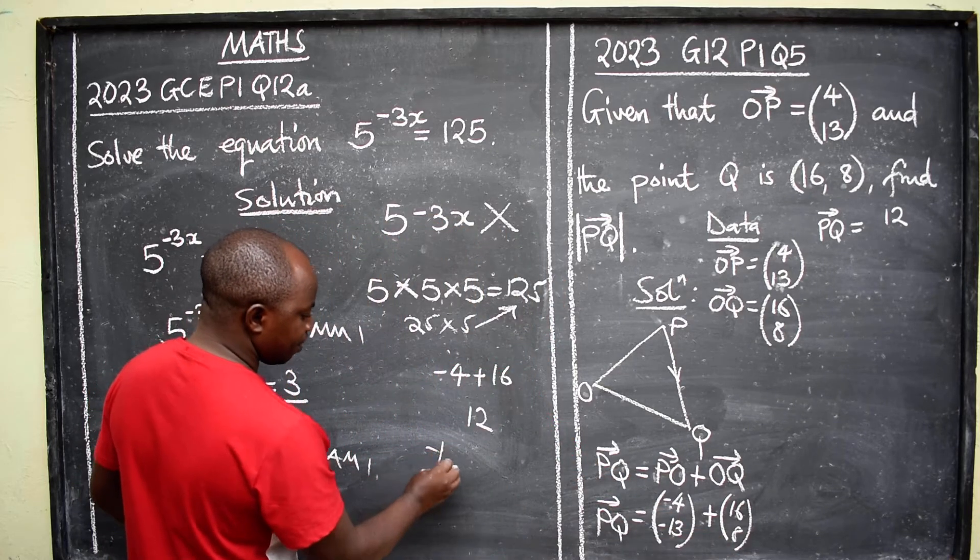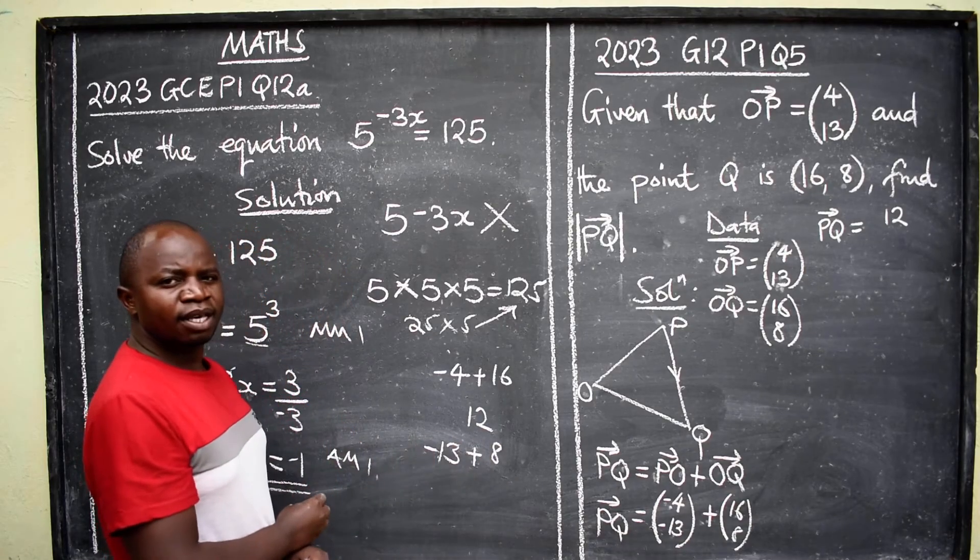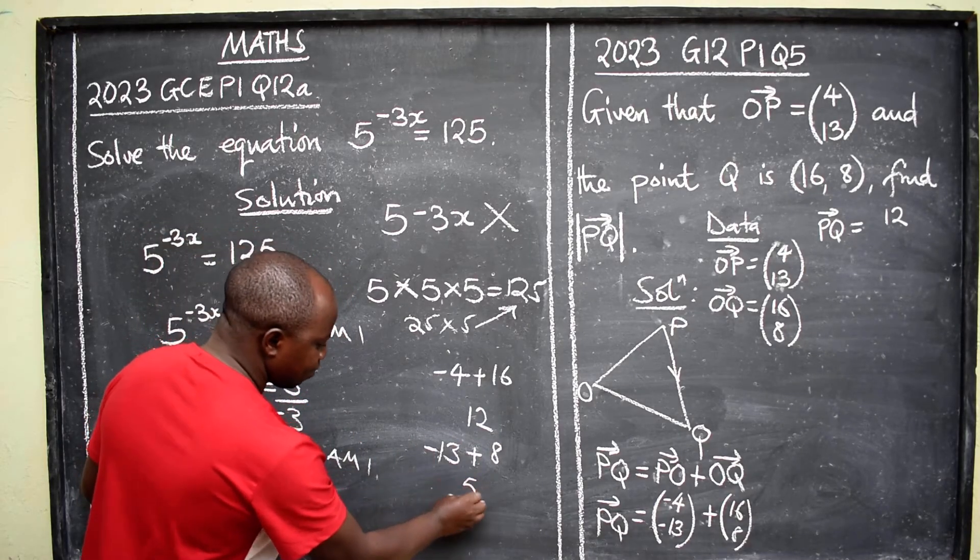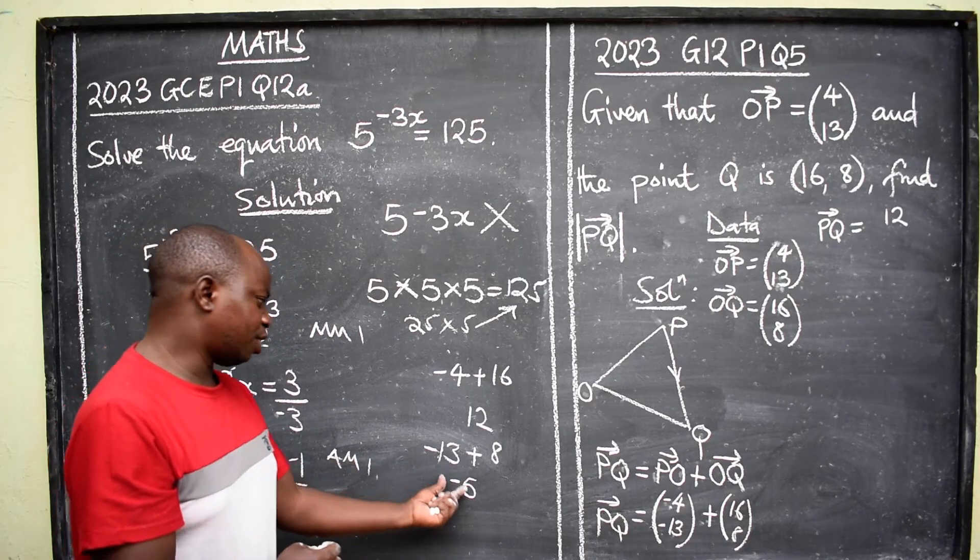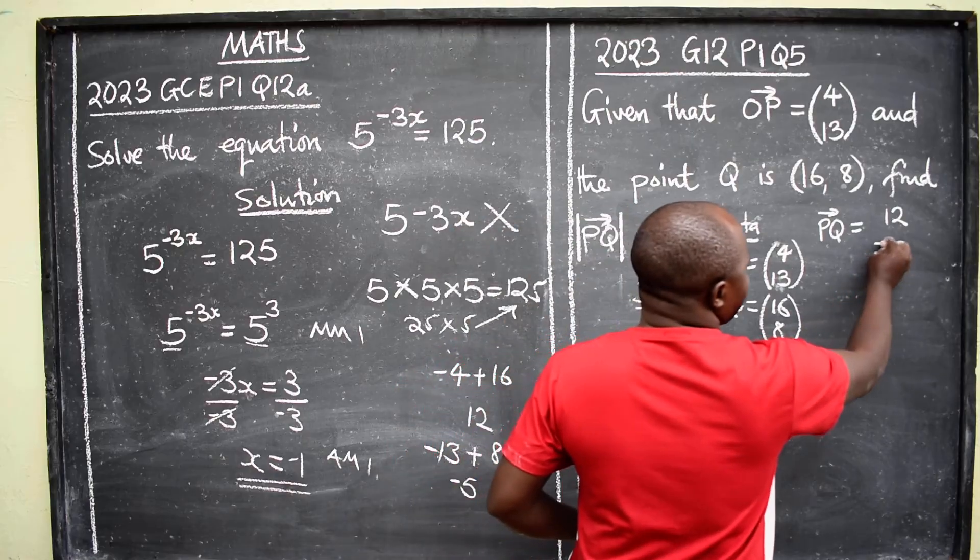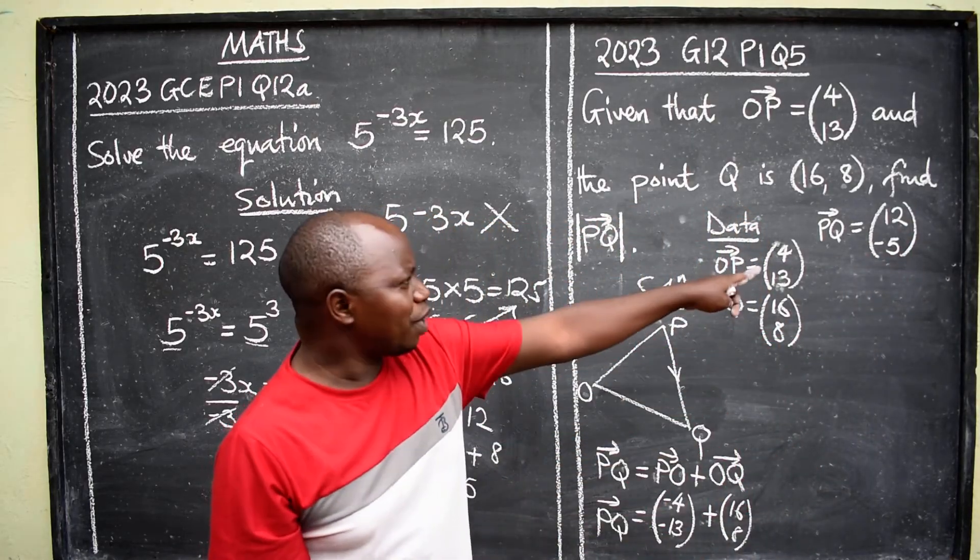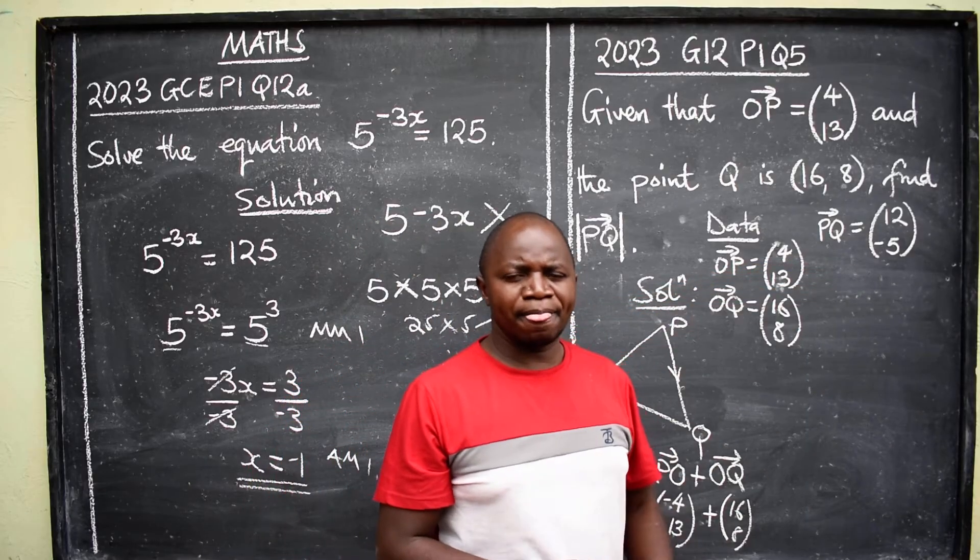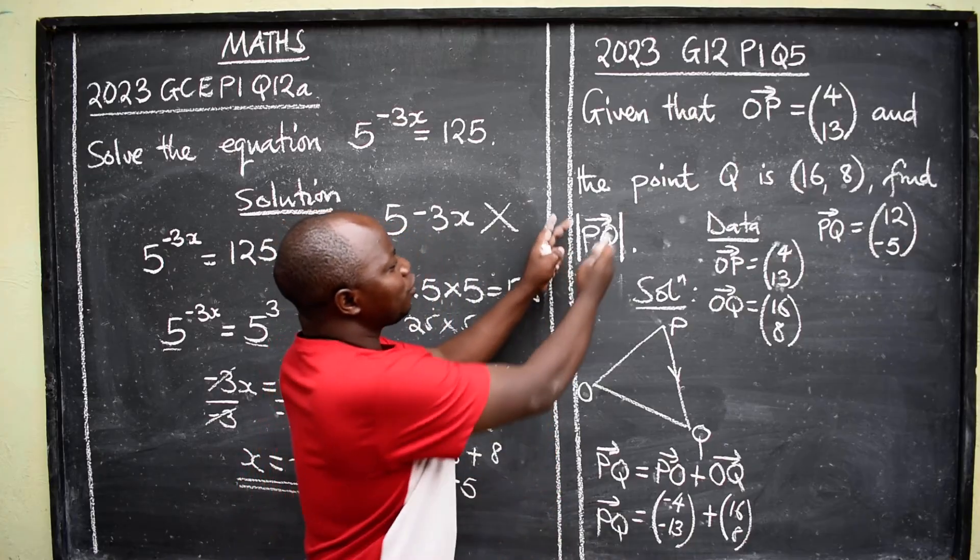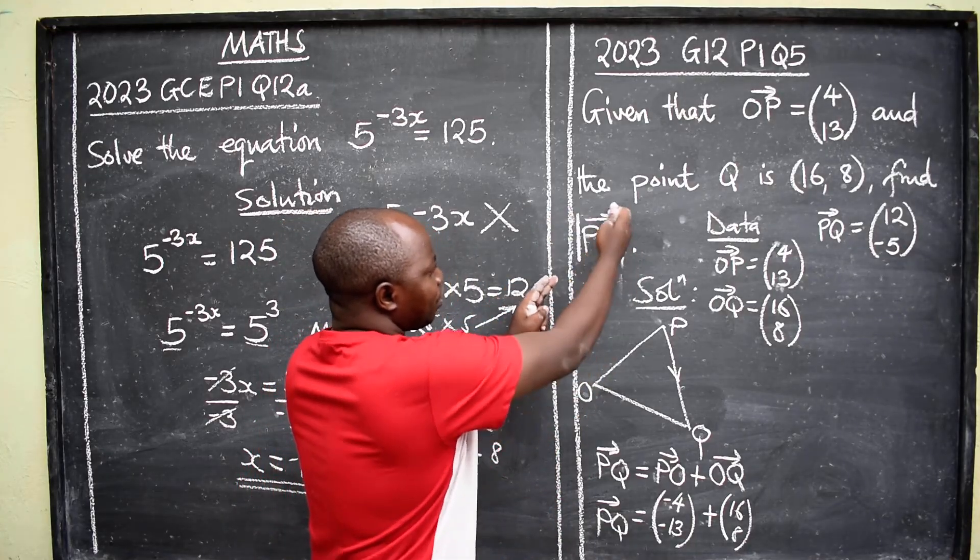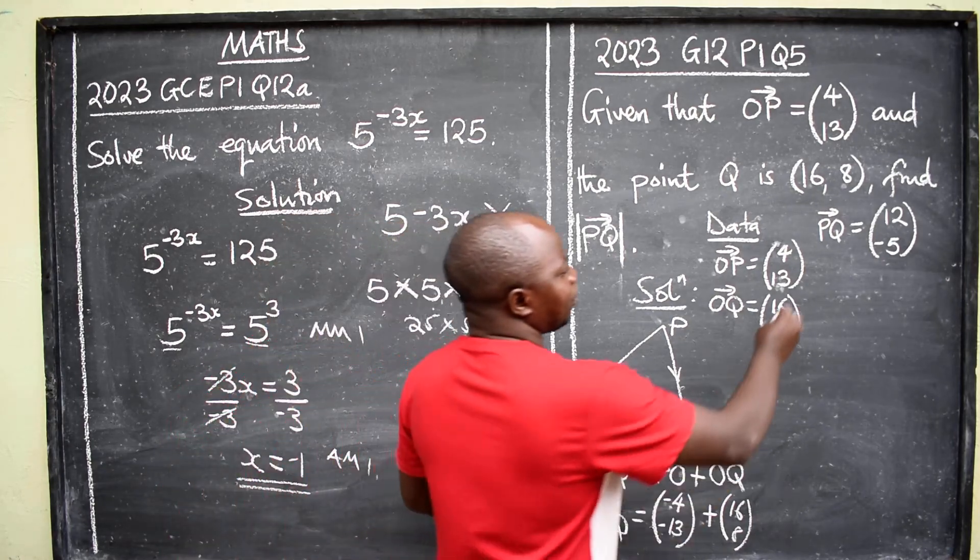Negative 13 plus 8, this will give us negative 5. So that is the one that we are going to write here. So what we have calculated here is the vector PQ. Now we are told to find the magnitude. We are told to find the magnitude, so now we are going to say therefore the magnitude of, it has a formula, so write square root.